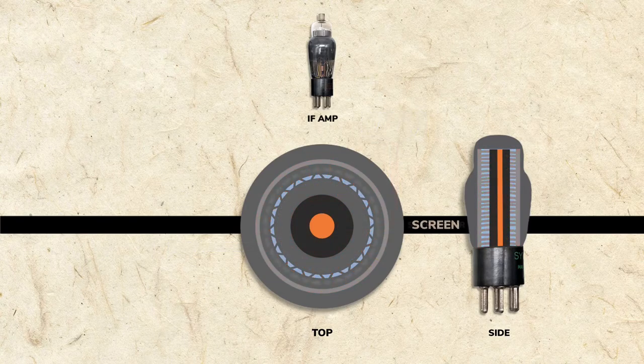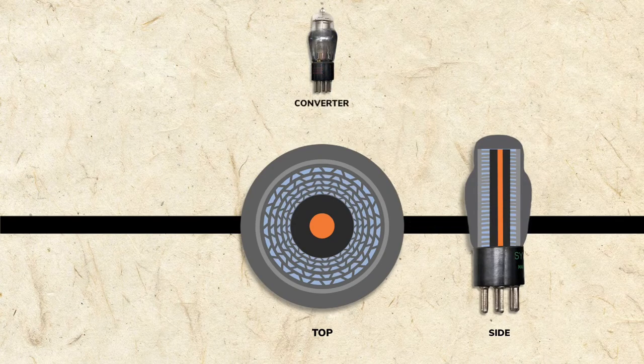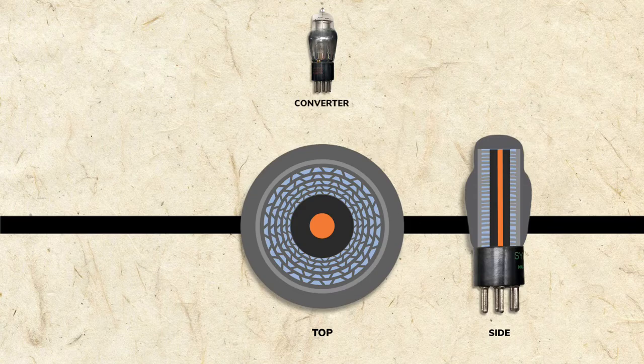Grid 2 is the screen, and grid 3 the suppressor. If you missed my segment on the converter tube, you may want to go back and watch it to learn more about how a tube functions.